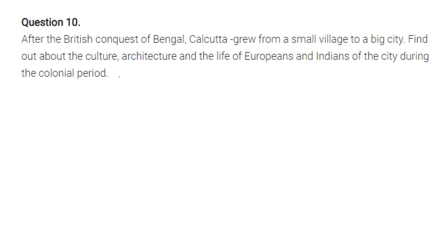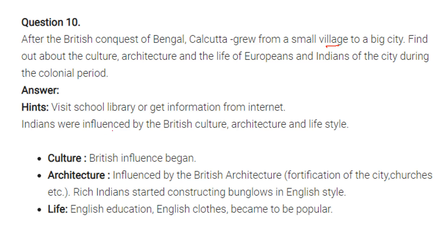After the British conquest of Bengal, Kolkata grew from a small village to a big city. Regarding the culture, architecture, and life of Europeans and Indians during the colonial period: Indians were influenced by British culture and architectural lifestyle. British influence showed in the fortification of the city, churches, and other structures. Rich Indians started constructing bungalows in English style. In education and clothes, things with a taste of Englishness became popular.